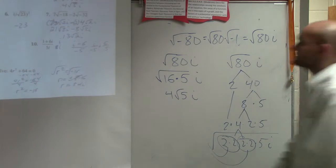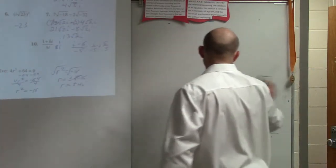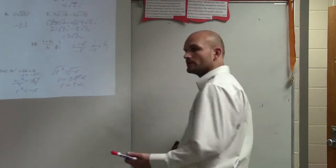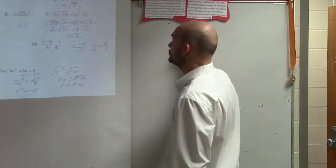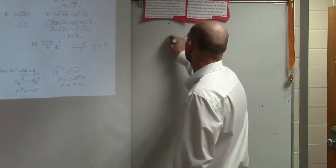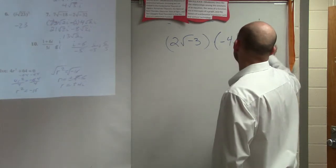So the next one, let's take a look at... You guys just need to remember the square root, or simplifying the square root. So the next one, number 8, says 2 radical negative 3 times negative 4 radical negative 12.